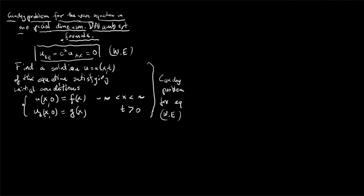Today we will derive a formula for such a solution, called the d'Alembert formula. We start from the fact that the most general solution of the wave equation is given in terms of two functions, capital F and capital G, corresponding to the backward wave and the forward wave.